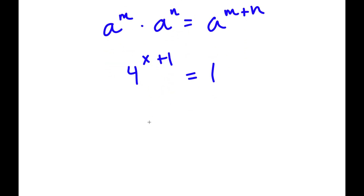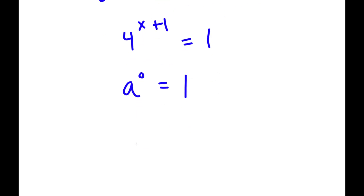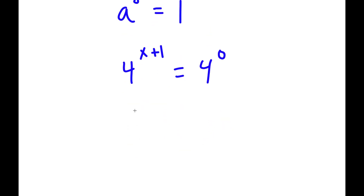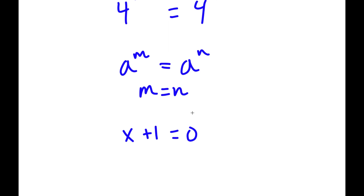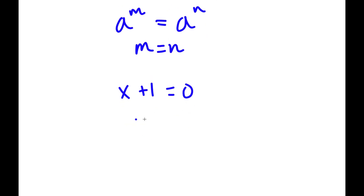Now, anything to the power of 0 is equal to 1, meaning I can replace 1 here with 4 to the power of 0. So now I have 4 to the power of x plus 1 is equal to 4 to the power of 0. If I have something in the form a to the power of m equals a to the power of n, this means m equals n. So in this case, x plus 1 equals 0, and subtracting 1 from both sides gives x is equal to negative 1.